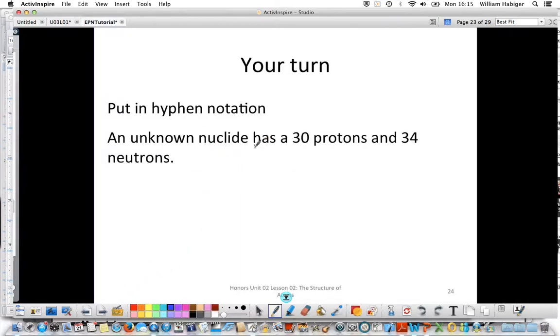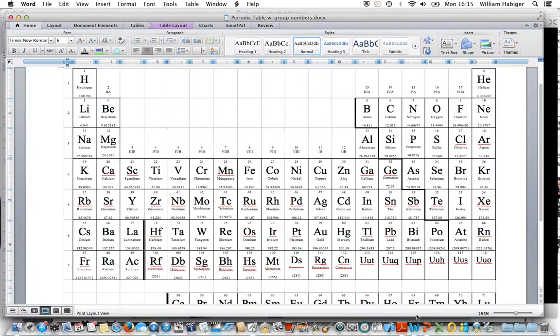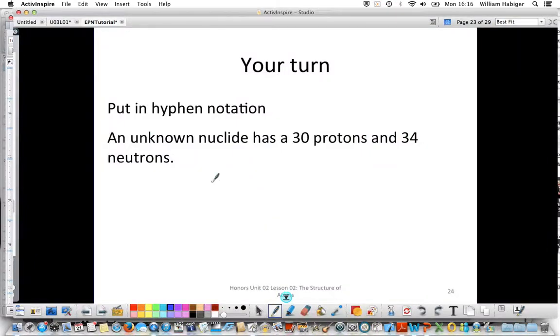Here we have an unknown nuclide, so we don't know what it is, but we know that it has 30 protons and 34 neutrons. So we can go to our periodic table and find the element that has 30 protons. That's going to be zinc with the atomic number of 30. And so we know the name of the element is going to be zinc. And then we want the mass number, which is the protons plus the neutrons. So they give us protons and neutrons. We add those two together. 30 plus 34 is 64. So our isotope is zinc-64.